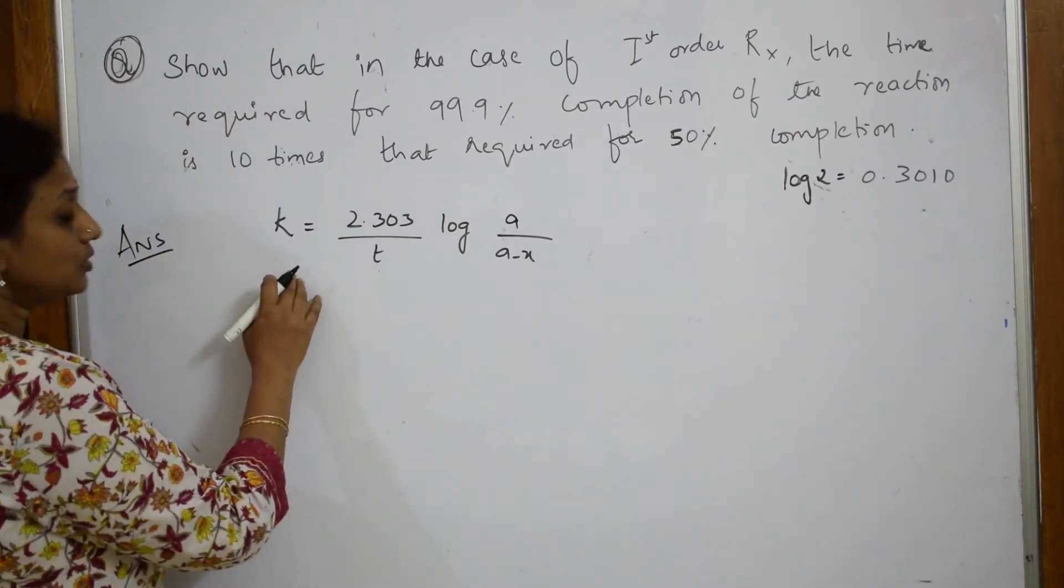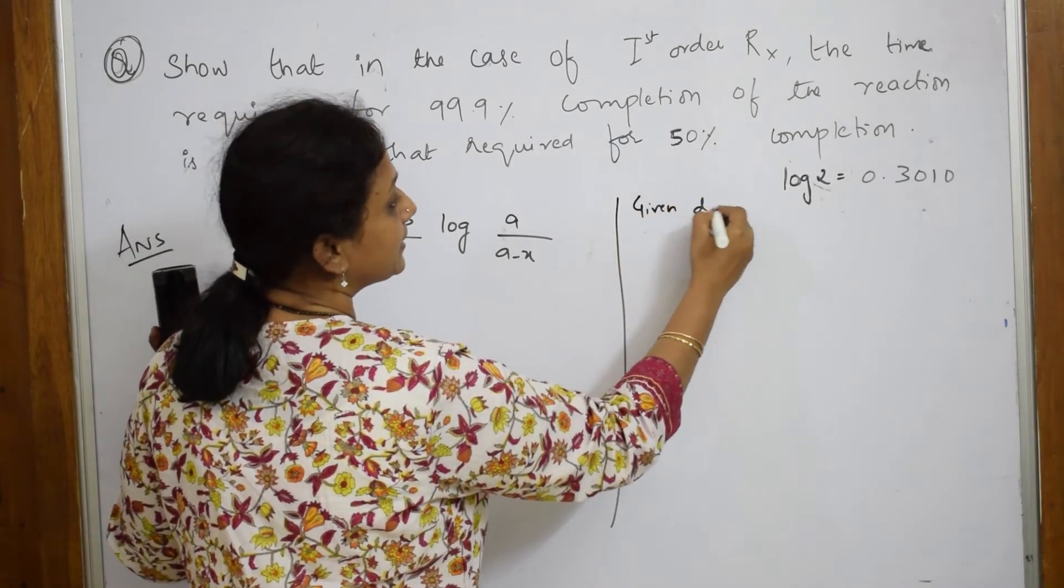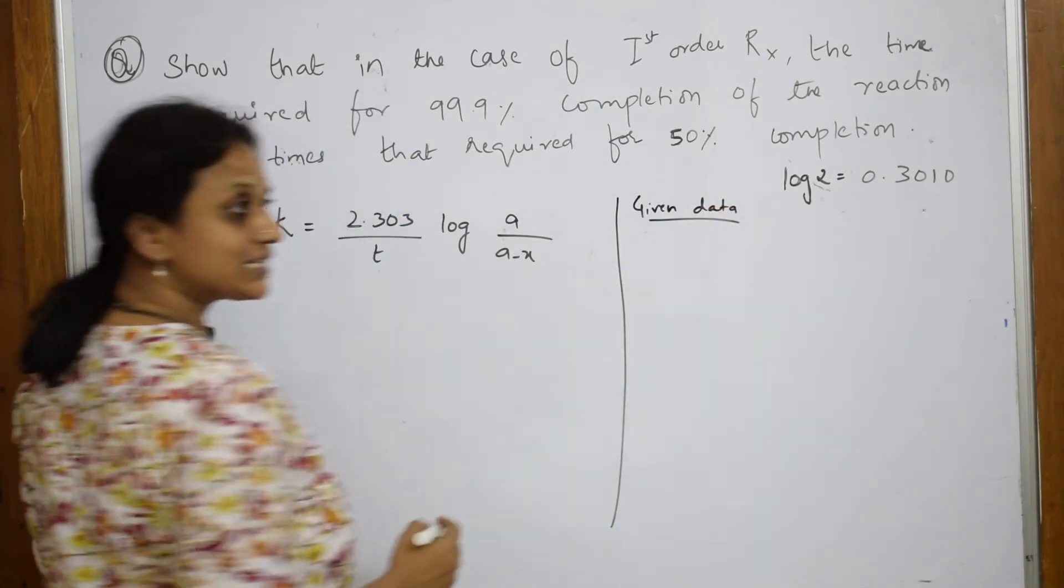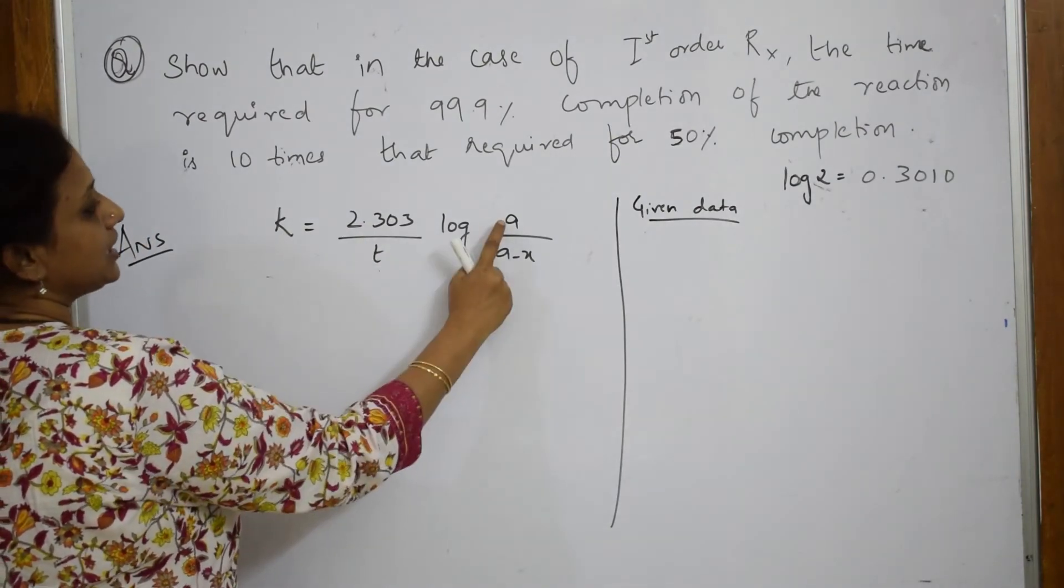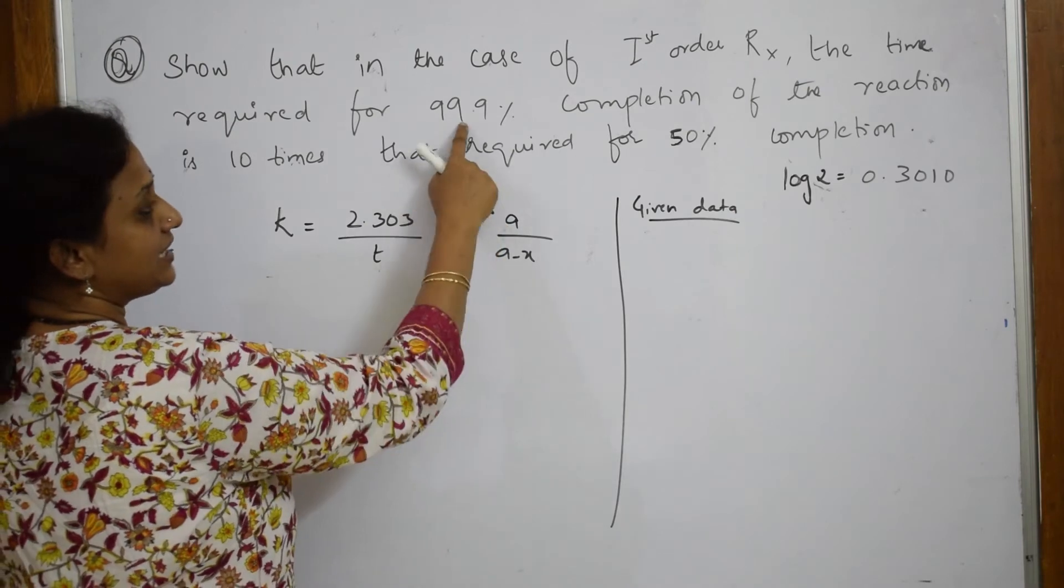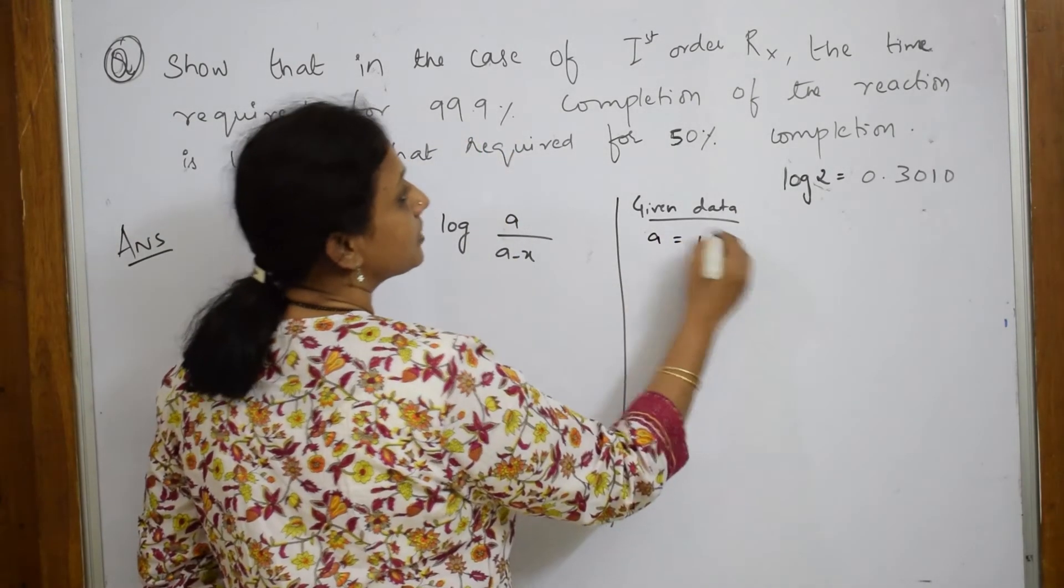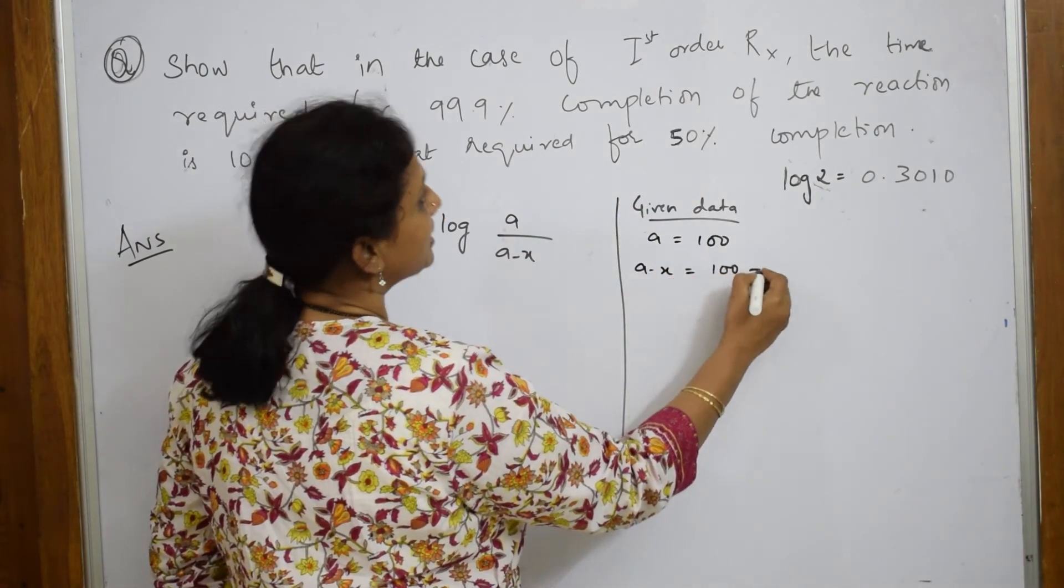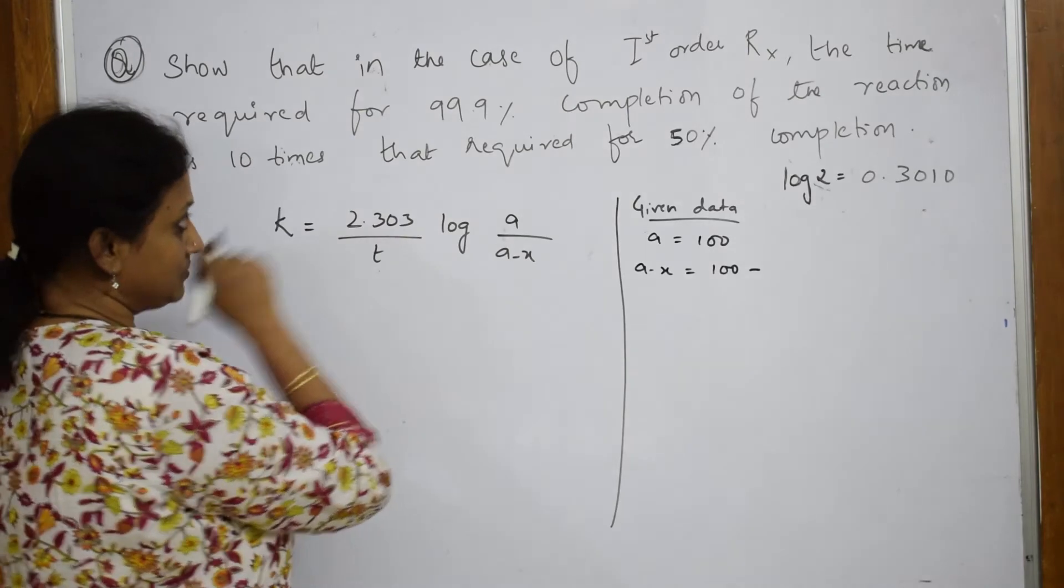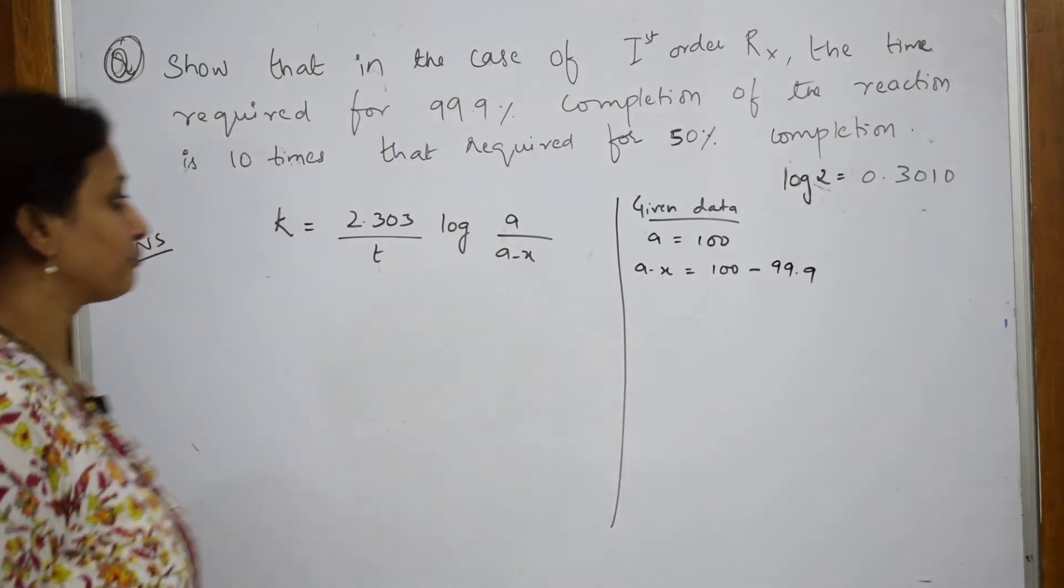Let us write the given data. What is given? A is given. That means 99% of that. So a = 100. A part of it is completed. A minus x is 100 minus how much? 99.9. So a-x = 0.1.